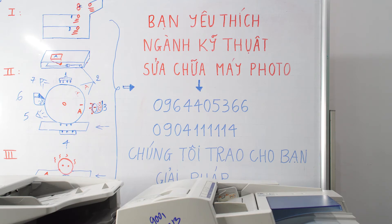Khi máy photo hiển thị màn hình báo mã lỗi, đồng nghĩa với việc máy sẽ treo và không thể vận hành, không thể sử dụng. Trong trường hợp báo mã lỗi trên màn hình sẽ có 2 tình huống xảy ra: mã báo lỗi báo cho chúng ta biết sự cố ở trường hợp đơn giản, ví dụ khi cấp nguồn vào khởi động bằng công tắc chính của máy.